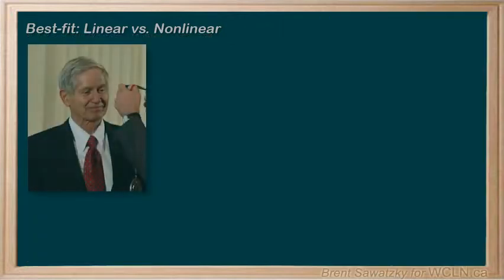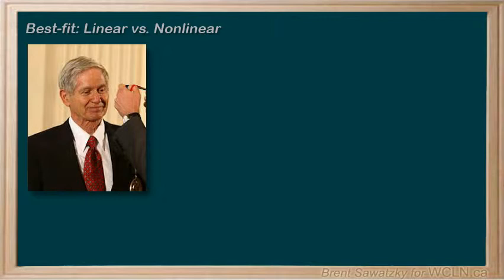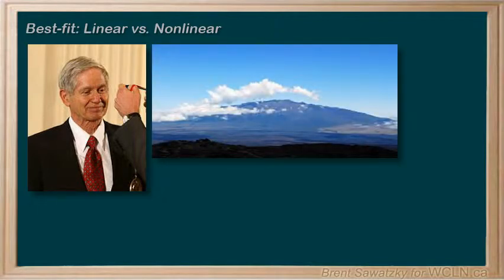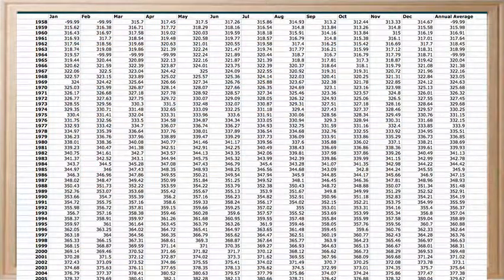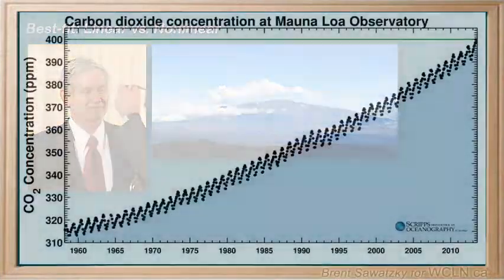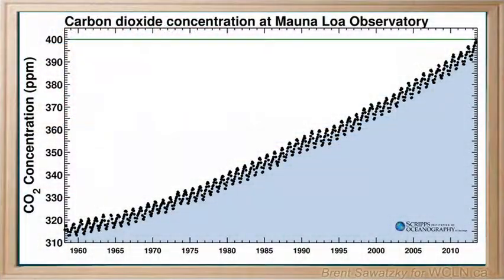A recent example of someone seeing a trend in data could be Charles Keeling, who collected piles of carbon dioxide data from Mauna Loa in Hawaii. Looking through this huge amount of data was far too challenging to appreciate the trends, but when he plotted the data, it looked like this, and he could see there is definitely a trend.